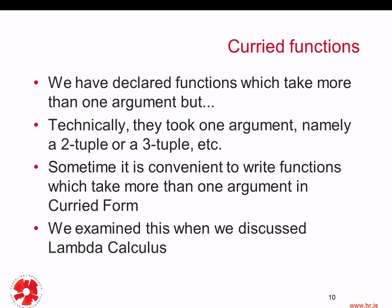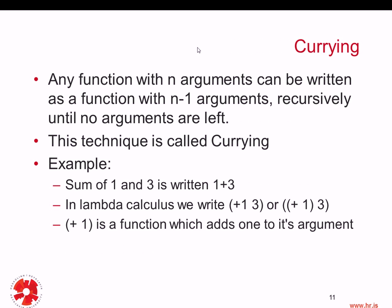However, sometimes it is convenient to write functions which take more than one argument in a curried form. As I said earlier, we examined this when we were discussing lambda calculus. Any function with n arguments can be written as a function with n minus one arguments, and recursively until no arguments are left. This technique is called currying, after Haskell Curry.